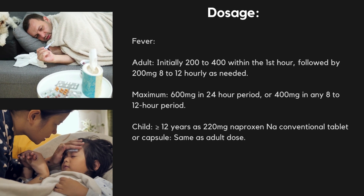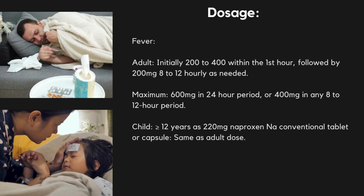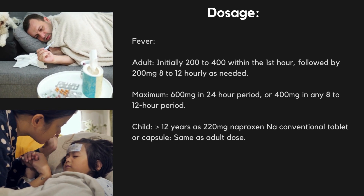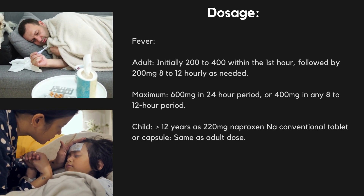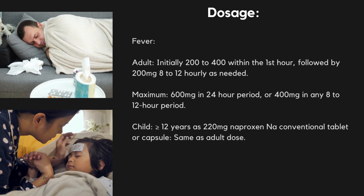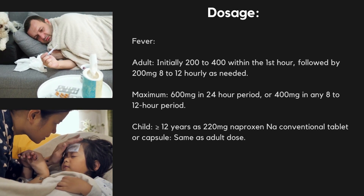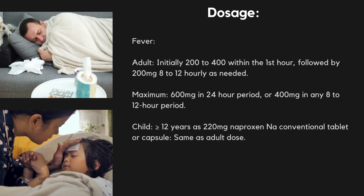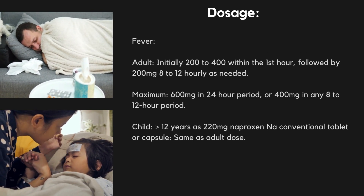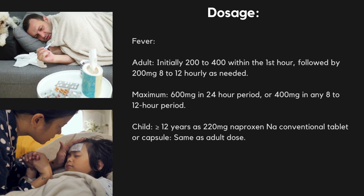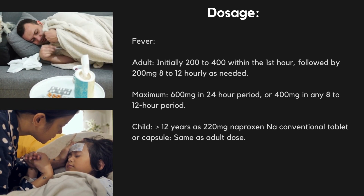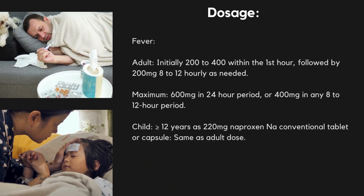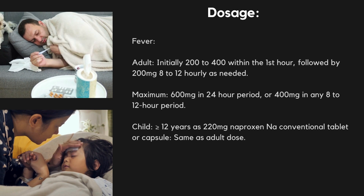Fever. Adult: initially 200–400 mg within the first hour, followed by 200 mg every 8–12 hours as needed. Maximum 600 mg in a 24-hour period or 400 mg in any 8–12 hour period. Child (greater than or equal to 12 years), as 220 mg naproxen sodium conventional tablet or capsule: same as adult dose.